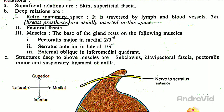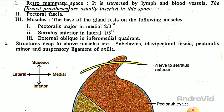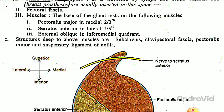The third deep relation is muscles. The base of the gland rests on the following muscles: first, pectoralis major in the medial two-thirds; next, serratus anterior in the lateral one-third; and third, external oblique in the inferior medial quadrant. The structures deep to these muscles are the subclavius, clavipectoral fascia, pectoralis minor, and suspensory ligament of the axilla.